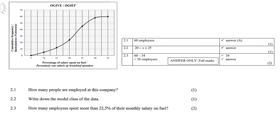2.2, write down the modal class of the data. Modal class of course is where you get the highest frequency and it's very clear on the graph. It is between 20 and 25.